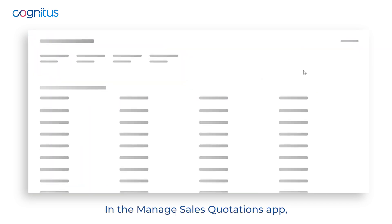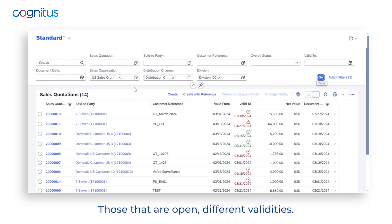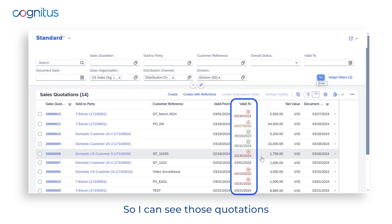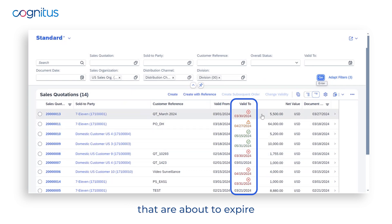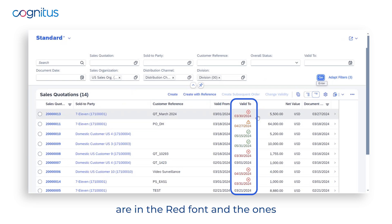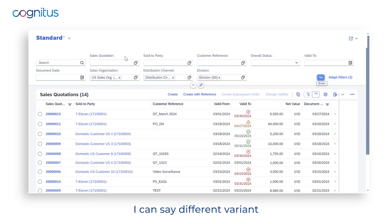In the Managed Sales Quotations app you can look at any range of quotations — those that are open, different validities. I want to draw your attention to the valid-to date. Quotations about to expire are shown in yellow font, those that have expired are in red font, and ones with a future date are in green.